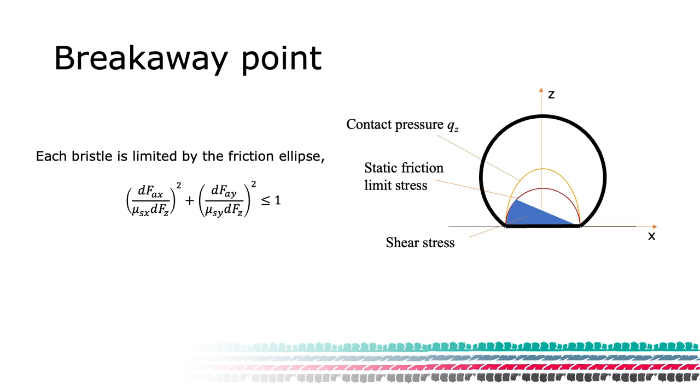Inside the friction ellipse, we know that we have adhesion. And on the boundary, we must have the breakaway point.